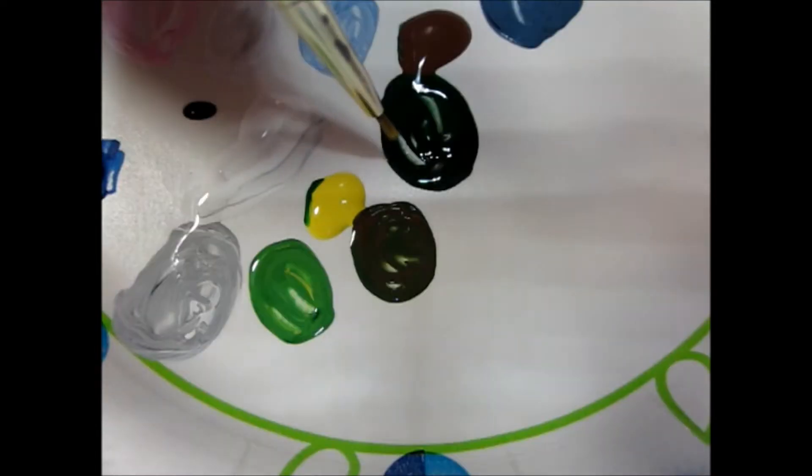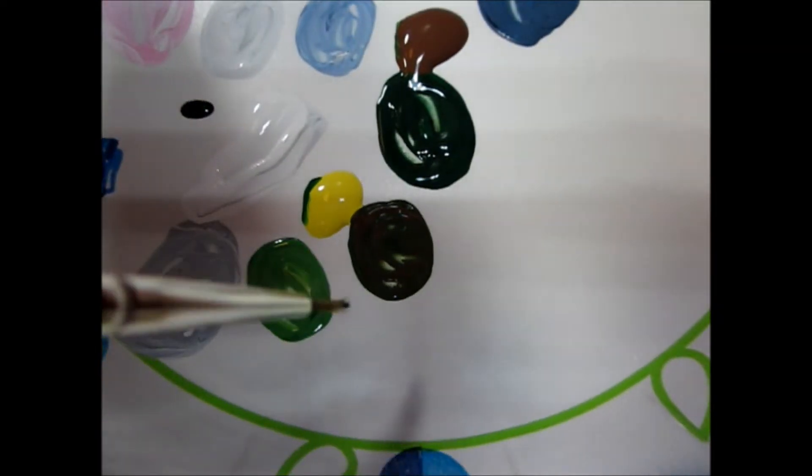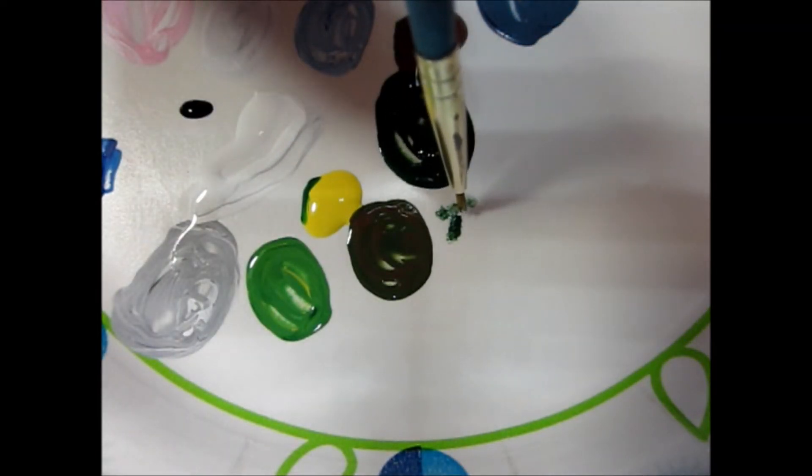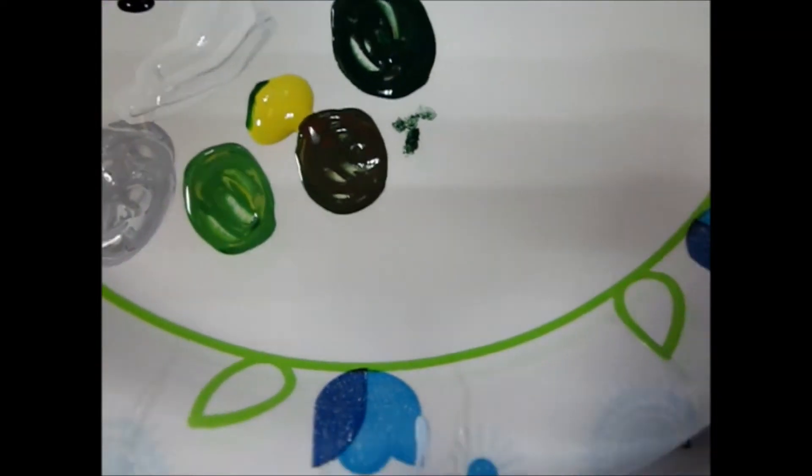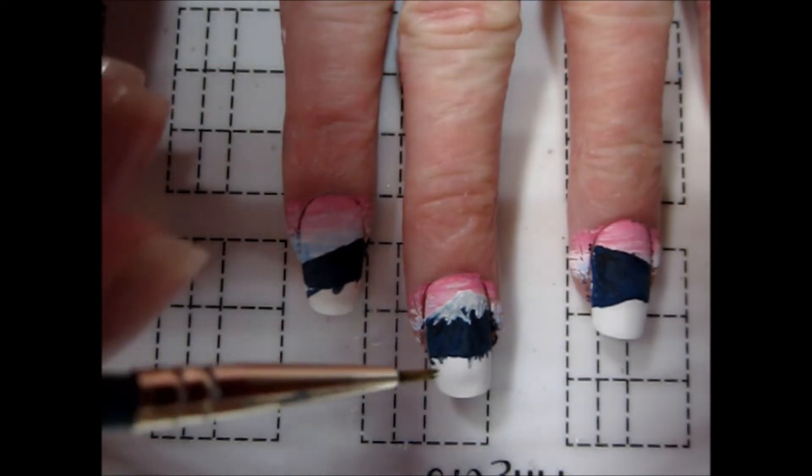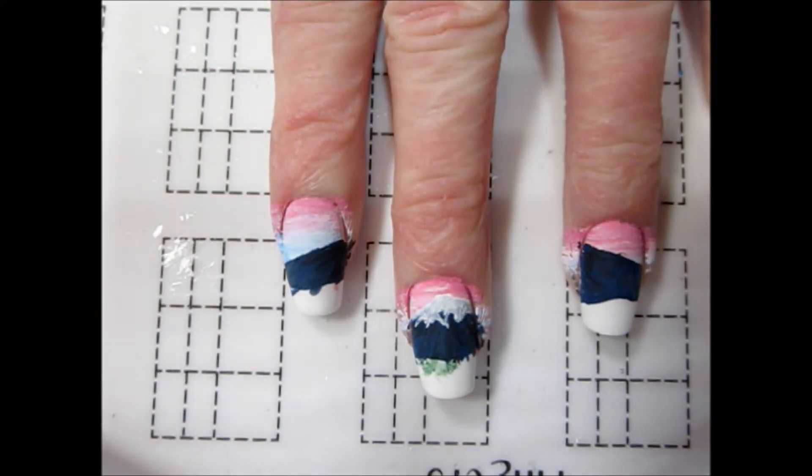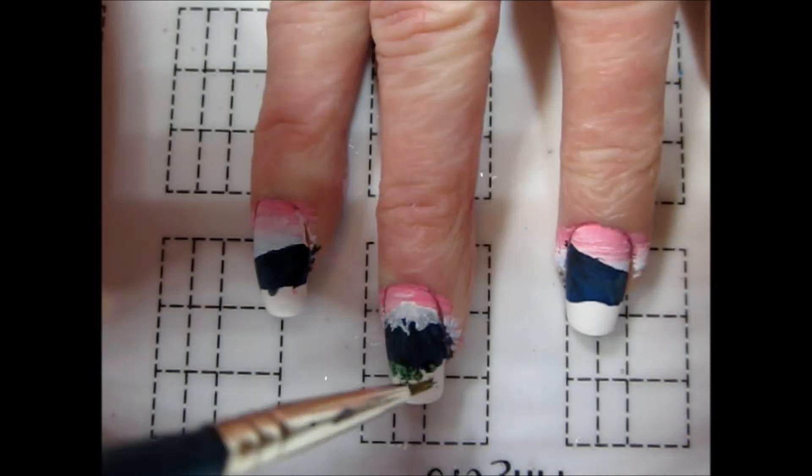For this next step, you'll want to use an old paintbrush because the technique will damage the bristles. I dipped my brush in a bit of dark green paint and pressed the brush directly onto my palette, blotting off excess paint. I then gently pressed the brush onto my nails, depositing tiny spots of green in the blank areas underneath the base of the mountain.